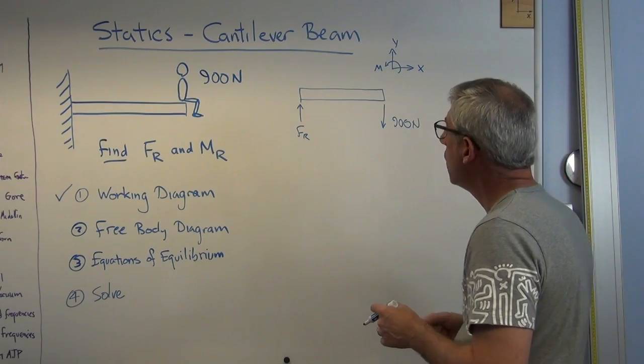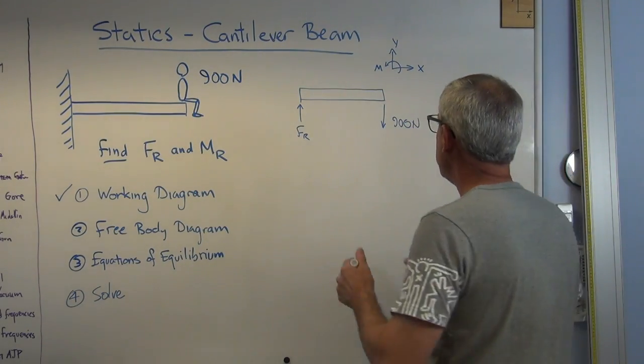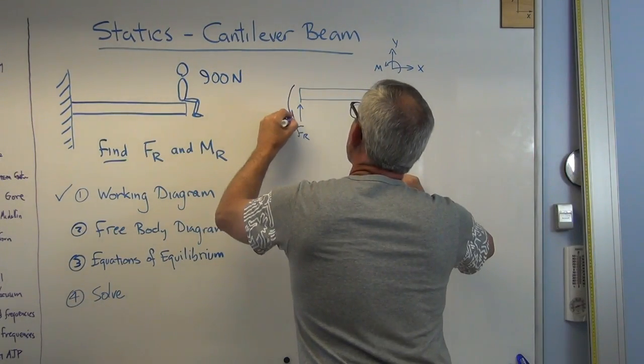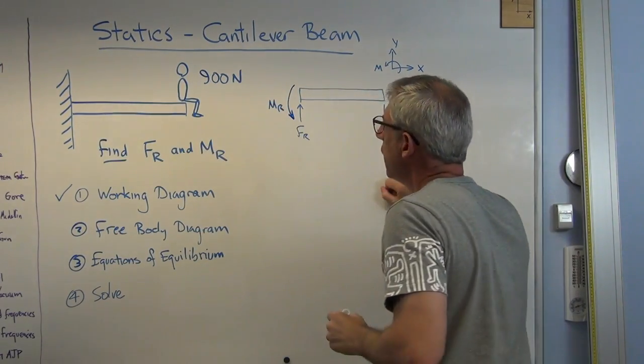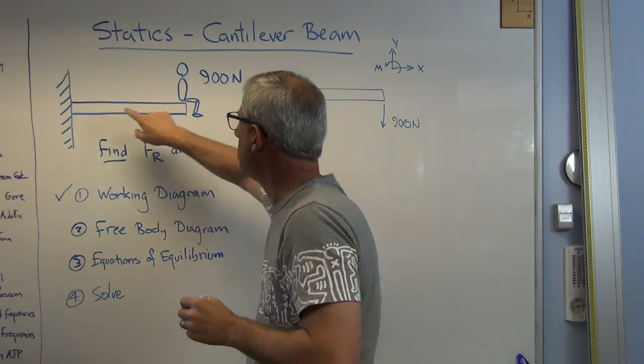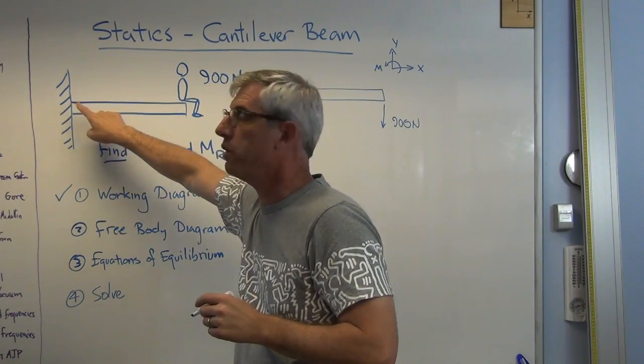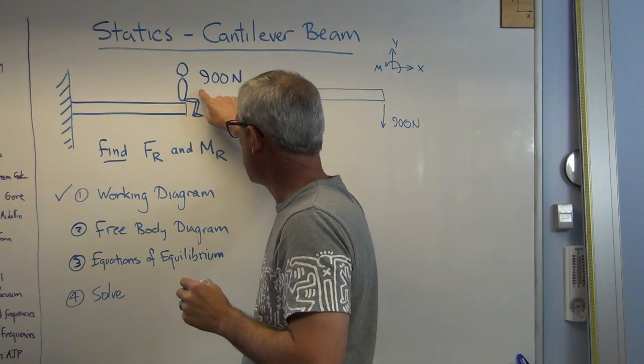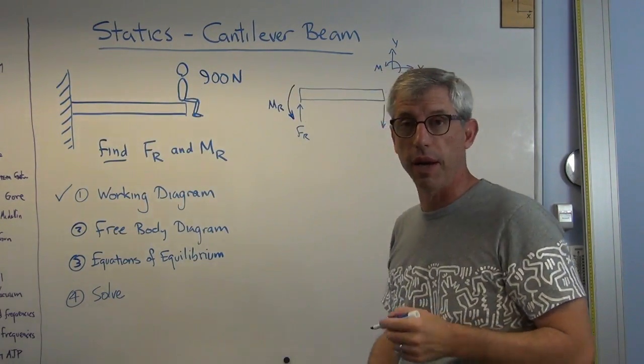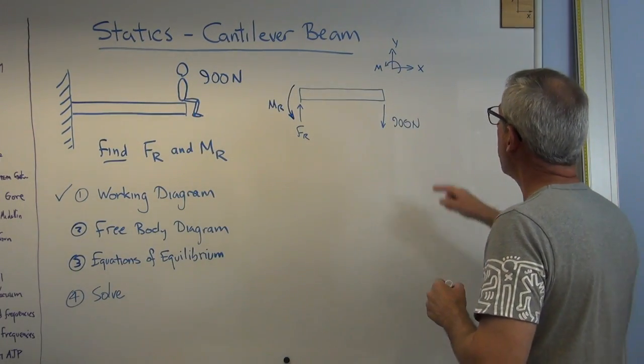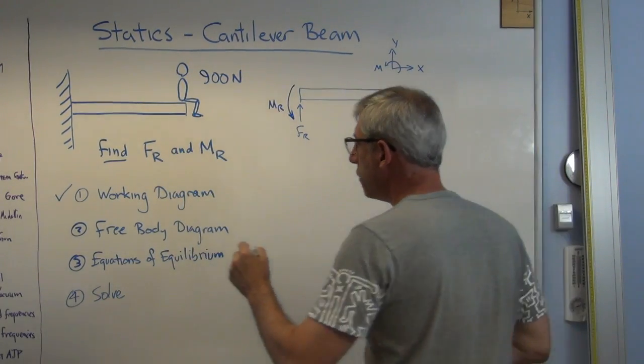Now, one more thing I need is a moment. I'm going to draw the moment like that. This is the resisting moment. This is the force and the moment that concrete block has to exert on that beam to keep the professor from falling off. So here's what we've got. There's the coordinate system. So we've got a free body diagram.